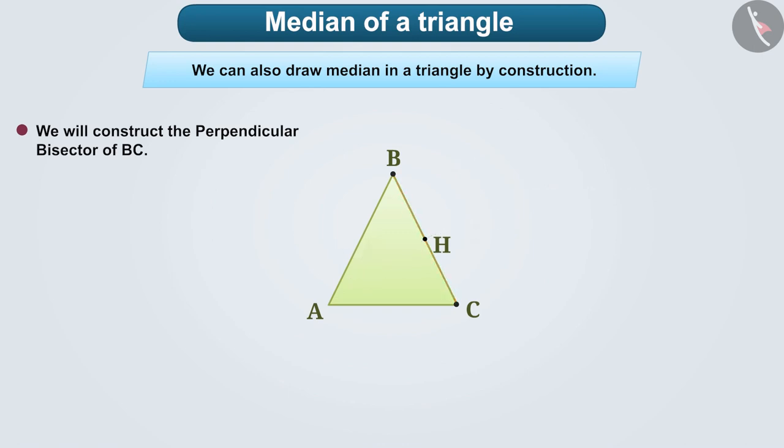Now, if we connect the midpoint H of BC to the vertex A opposite to BC in this way, the line segment obtained will be called a median AH of triangle ABC.